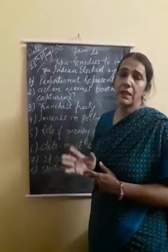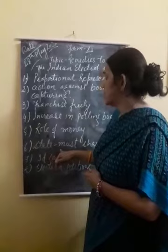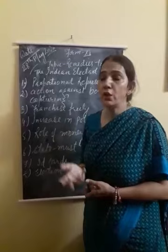Then regarding the role of money, effort should be made to check the role of money. Each and every state must share its expenses — how much they have spent on the election system — and there should be control on their expenditures.